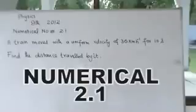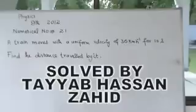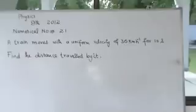Bismillah rahman raheem, assalamu alaikum. My name is Tayyab Hasan Zahar. I am from Pakistan. Physics 9th class, new syllabus. Numerical number 2.1: A train moves with a uniform velocity of 36 km per hour for 10 seconds. Find the distance travelled by it.